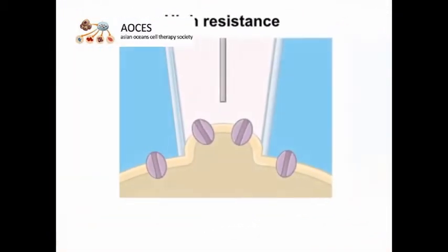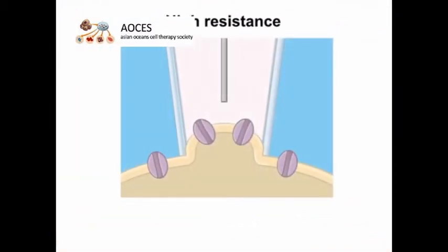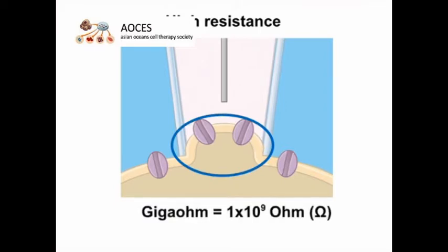a high resistance seal is formed between the pipet and membrane patch. Because the resistance of the seal is in the giga-ohm range, it is known as a giga-ohm seal.